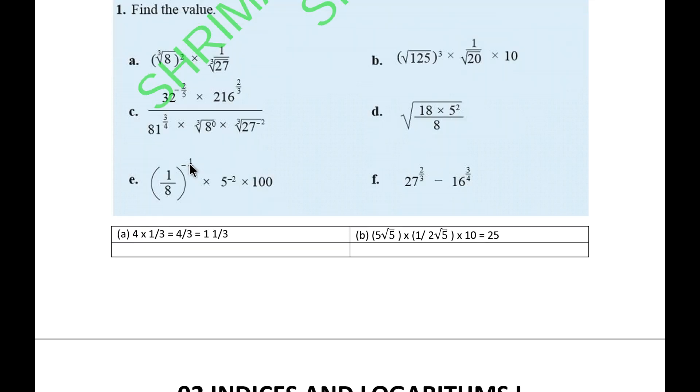The C part: here 32 and here 216, here 81, here root 8 to the power 0 and here root 27. Any power of 0 is 1, and any root of 1 is 1. 32 means 2 to the power 5. 216 means 6 to the power 3. 81 means 3 to the power 4. 27 means 3 to the power 3.